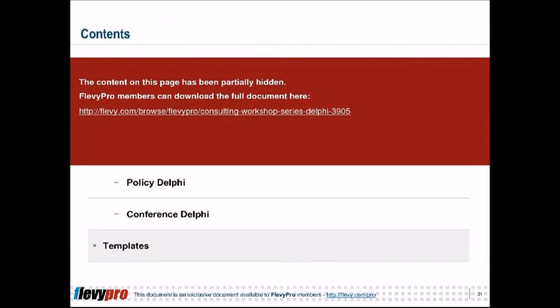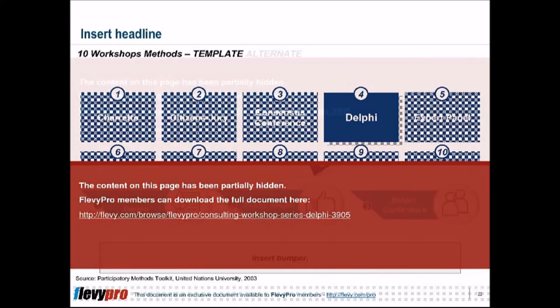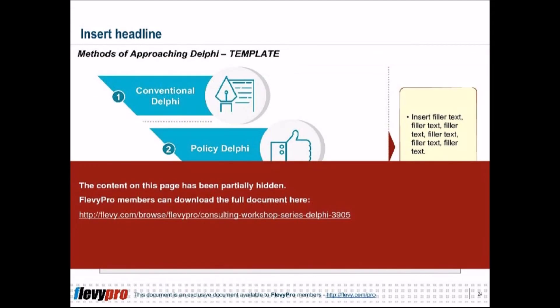The Delphi Conference is a group Delphi that allows for more discussions and debate. Participants forego anonymity, and time constraints may require a fixed number of cycles. Consensus can be increased from one to two rounds of voting. The Delphi Conference often takes less time than the traditional Delphi.